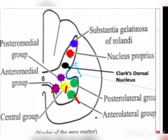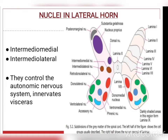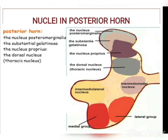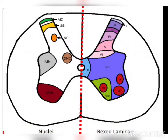The lateral horn contains two nuclei: the intermediomedial and the intermediolateral. They control the autonomic nervous system and innervate the viscera. In the posterior horn there are several nuclei: posterior marginalis (the posteriormost nucleus), substantia gelatinosa, nucleus proprius, and the dorsal nucleus (thoracic nucleus). These are the nuclei and their corresponding Rexed laminae.